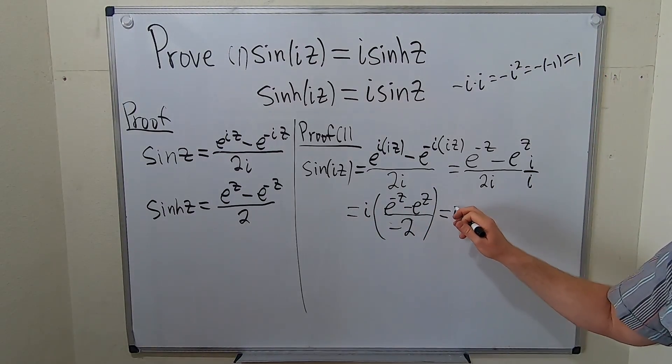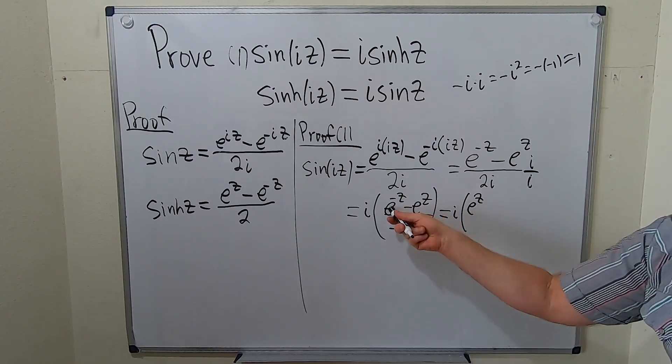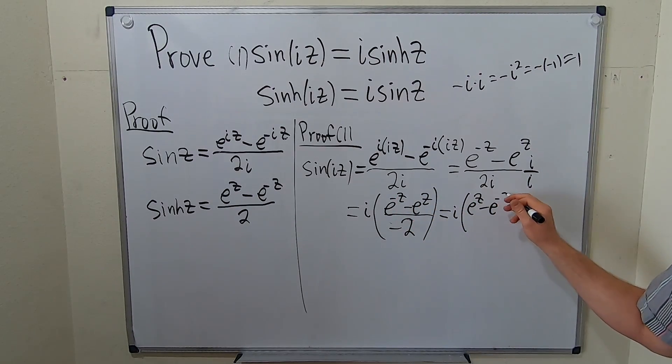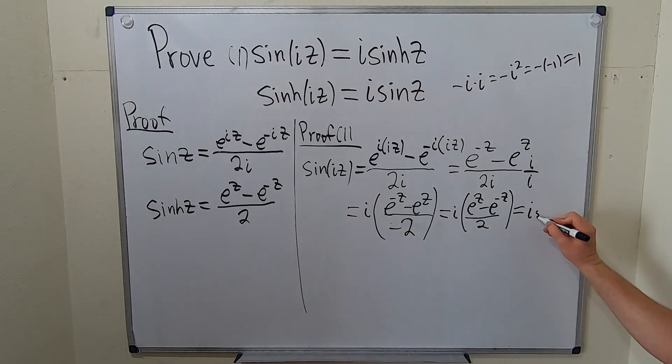Ah, okay. This is great because now you can distribute the negative upstairs. So that's going to be i. And then switching the signs, this is going to become a positive e to the z minus e to the negative z all over 2. Oh, this is so cool. This is i sinh z. Good stuff.